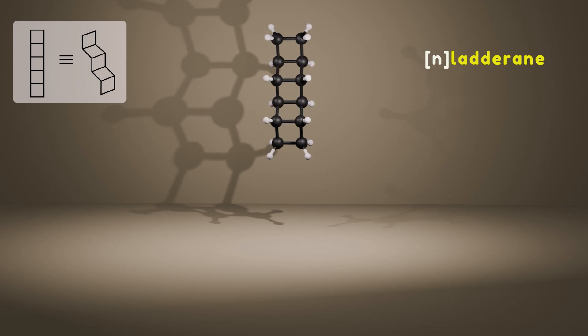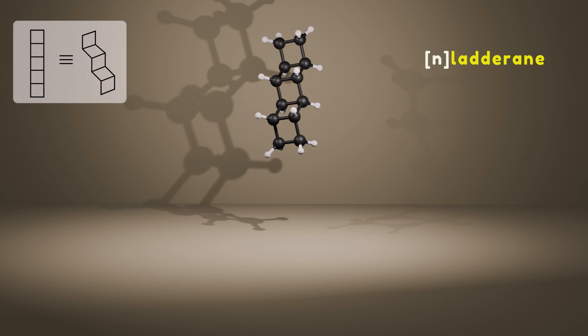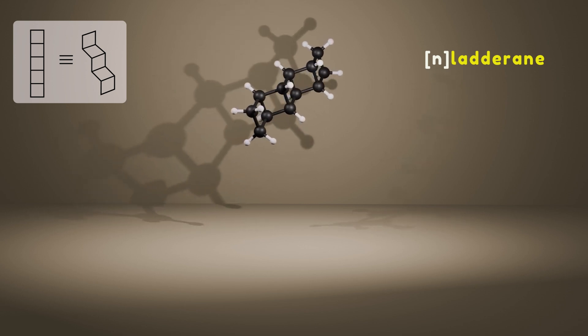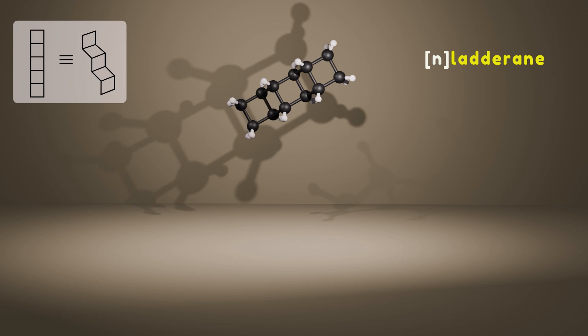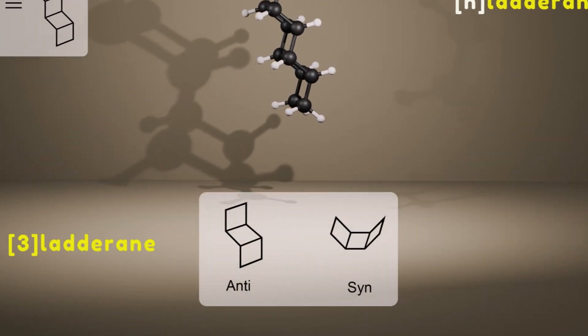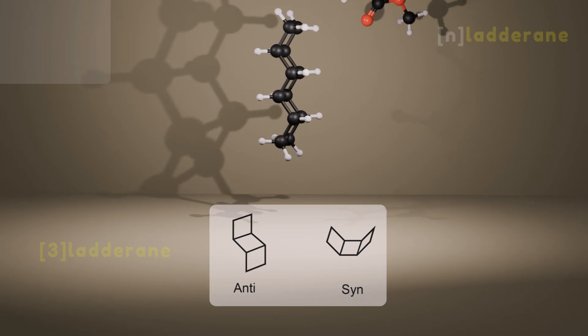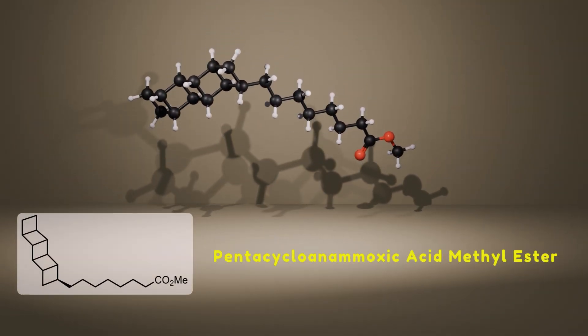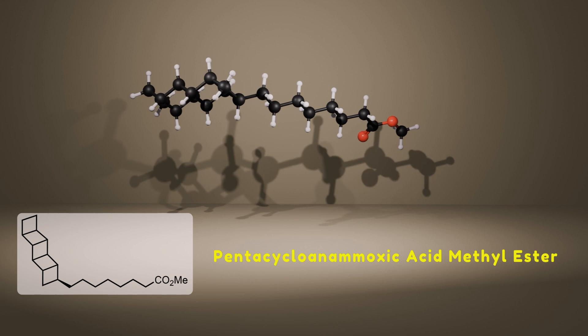A ladderane is a structural motif consisting of n cyclobutadiene rings fused in a linear fashion. Stereochemistry of these unprecedented structures is also important. For instance, free ladderane could exist as syn or anti-isomers. Pentacycloanammoxic acid methyl ester is one of the ladderane structures that predominantly is located in the anammoxosome membrane.